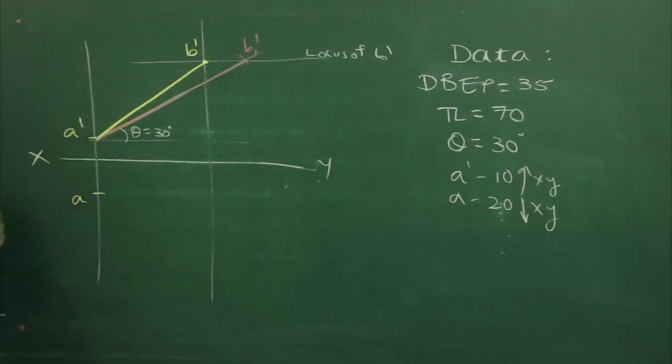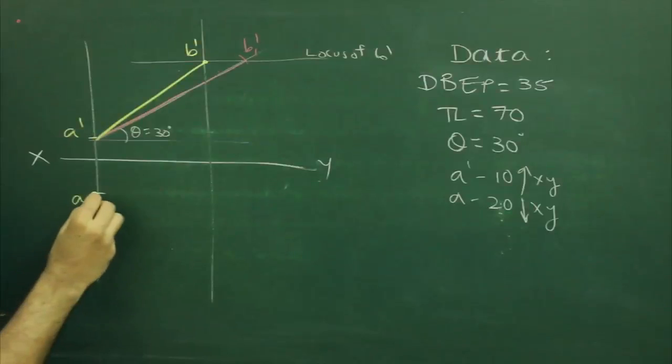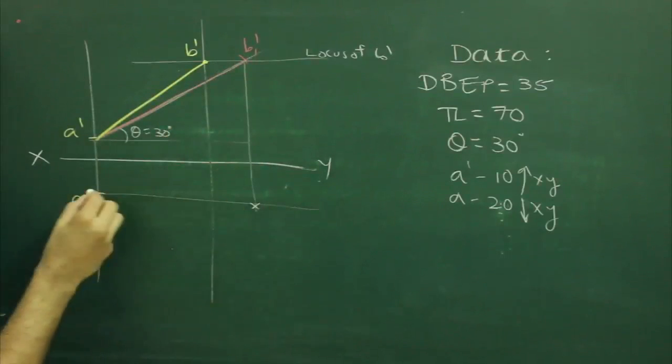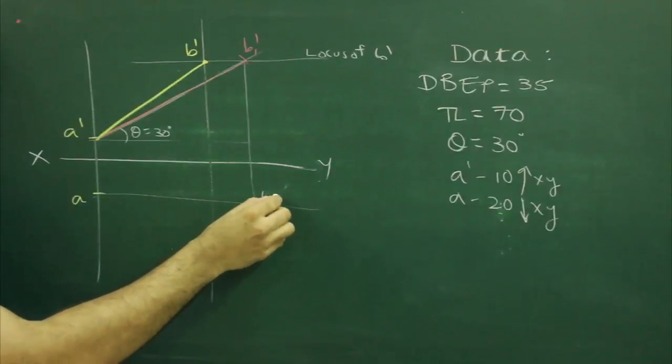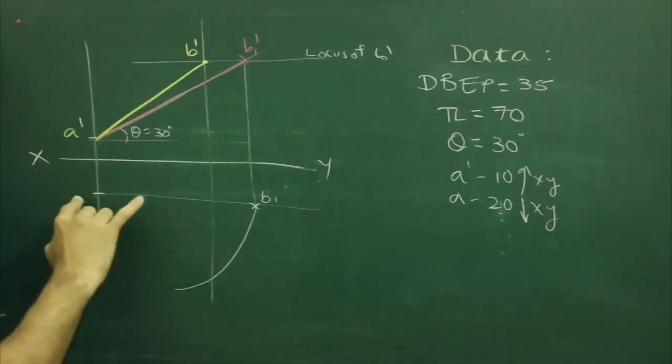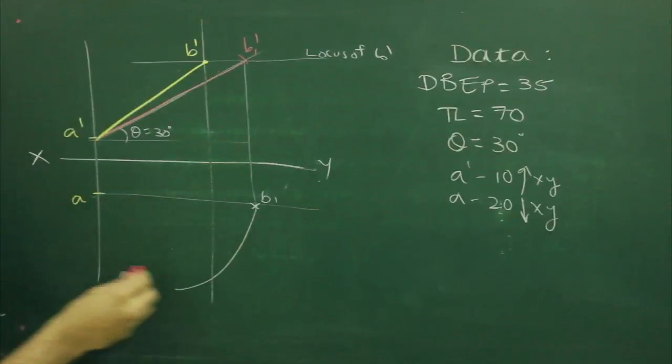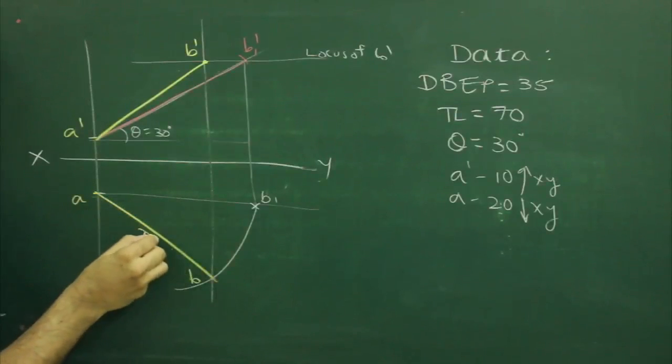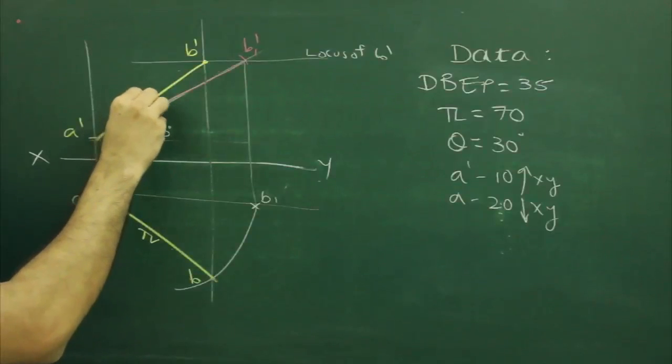Join A dash to B dash. After that, I will take B1 dash straight down till A, mark that point as B1, and I will rotate from A. So wherever it will cut, that point would be B. So that is top view, and that is front view.